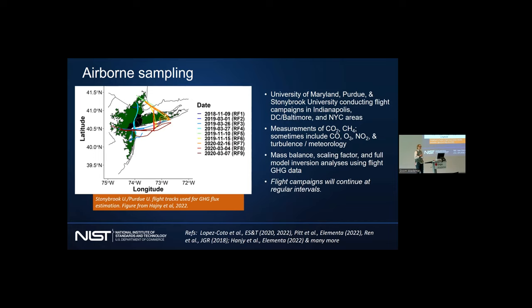We do a lot of aircraft sampling in the Northeast Corridor, in conjunction with partners at the University of Maryland, Purdue, and Stony Brook University. They conduct flights in Indianapolis and the Northeast Corridor, mainly around Washington D.C. and Baltimore, and in New York City area. They take the regular suite of greenhouse gases, CO2 and methane, but sometimes also CO, ozone, NO2, and important meteorological parameters like turbulence. We use different quantification methods including mass balance, scaling factor, and hybrid full model data inversion.